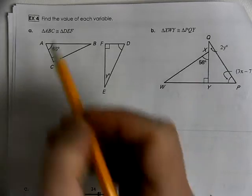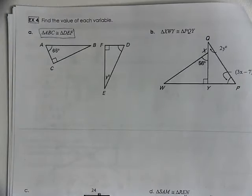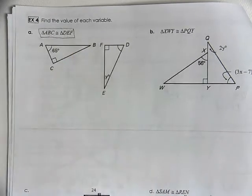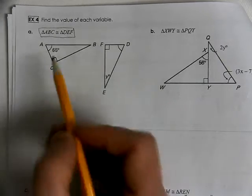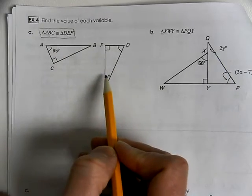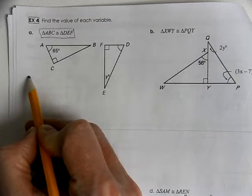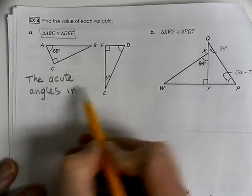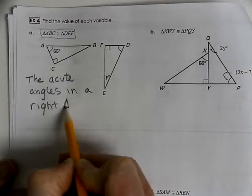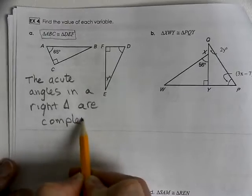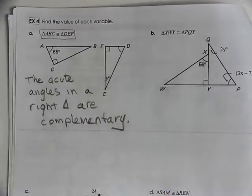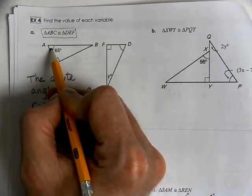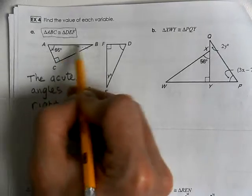Here, we're looking at two triangles. They give us a congruent statement. They tell us which triangles are congruent. This helps us indicate exactly which angles or which sides match up. It's pretty simple by looking at it. But, we have the 90 degree angles and we have these two acute angles. The acute angles in a right triangle are complementary.